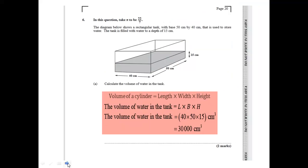Question 6 says to take pi as 22/7. The diagram shows a rectangular tank with base 50 cm by 40 cm, filled with water to a depth of 15 cm. The volume of water in the tank is length × width × height: 40 × 50 × 15 = 30,000 cubic centimeters. That's worth 2 marks.